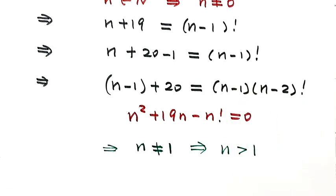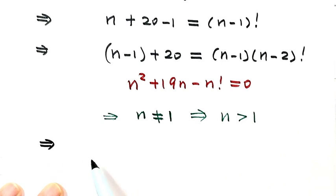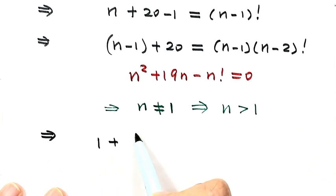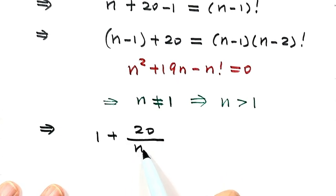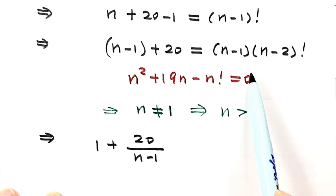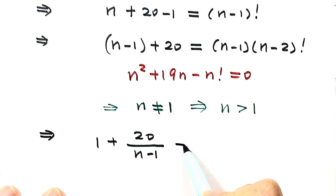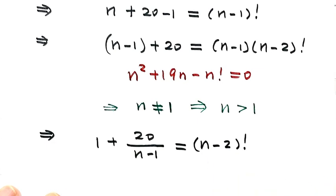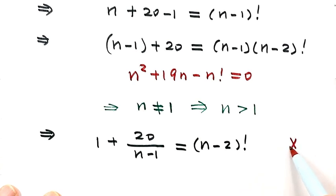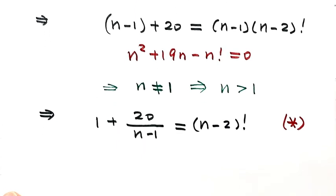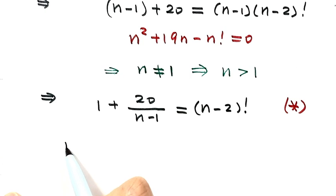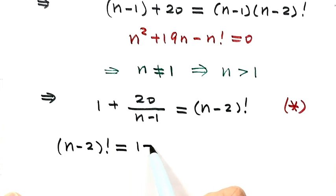After dividing, the left-hand side becomes 1 plus 20 over (n minus 1), and the right-hand side equals (n minus 2) factorial. Let's label this result with a star. Now let's use this to narrow down the potential solutions for n, starting from: (n minus 2) factorial equals 1 plus 20 over (n minus 1).